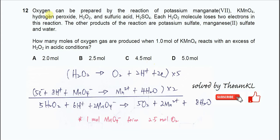Question 12. Oxygen can be prepared by reactions of KMnO4, H2O2, and H2SO4. Each H2O2 loses two electrons in this reaction. The other products are potassium sulfate, manganese sulfate, and water. The question is: how many moles of oxygen gas are produced when one mole of KMnO4 reacts with excess H2O2 in acidic conditions?